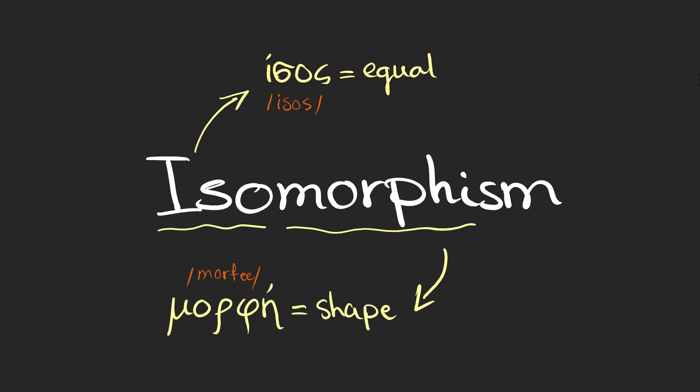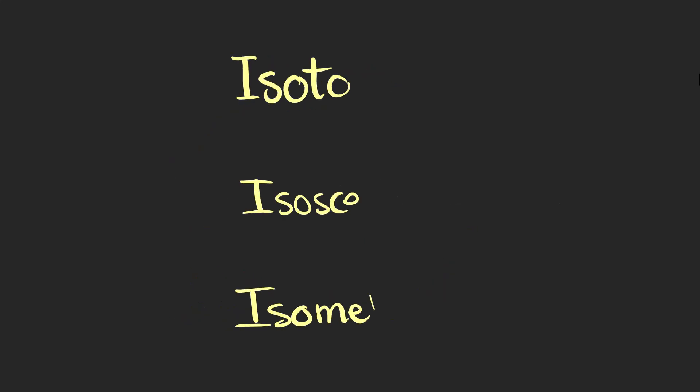The first part comes from a Greek word isos that means equal or the same. And the second part from another Greek root morphi which means shape. You might have also seen these words that start with the same word: isotope, isosceles, and isometric.